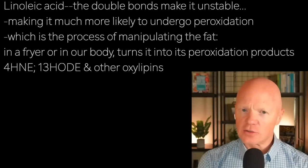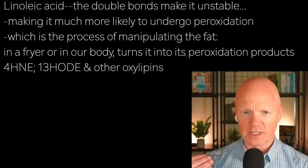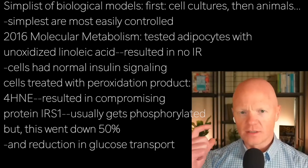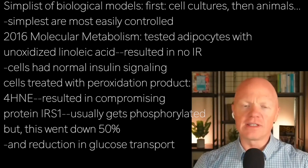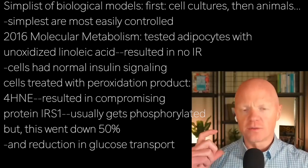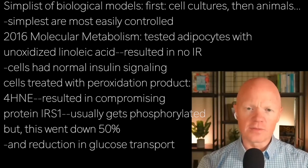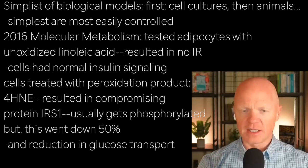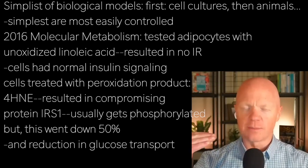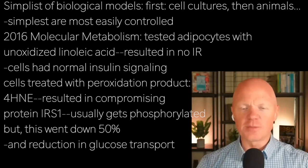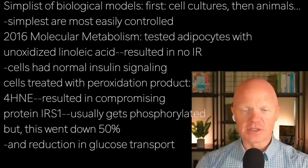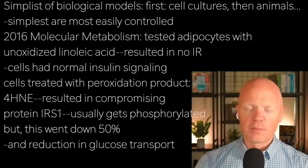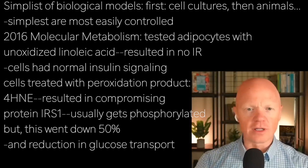Let's explore the evidence. I want to start with the simplest of biological models that we biomedical scientists use, namely cell cultures. We're going to look at the evidence in cells, then we're going to move on to a little bit of animal evidence. The nice thing about both of those models is that, while they are stepping up in complexity — going from isolated cells to animals is certainly a step up, with humans being the most complex — the simpler model comes with a little more clarity.